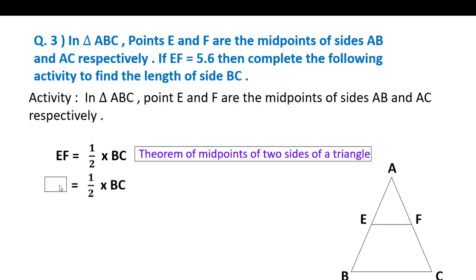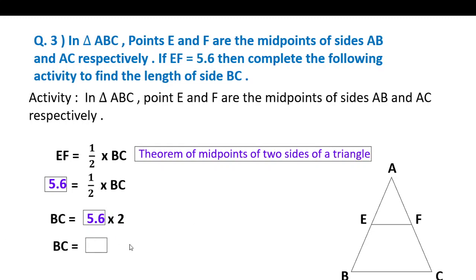The value of EF is given as 5.6. So EF equals half of BC. Substituting: 5.6 equals half of BC. Therefore BC equals 2 multiplied by 5.6, which gives BC equal to 11.2 units.